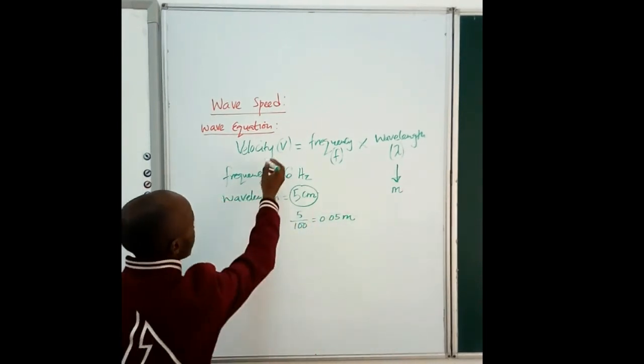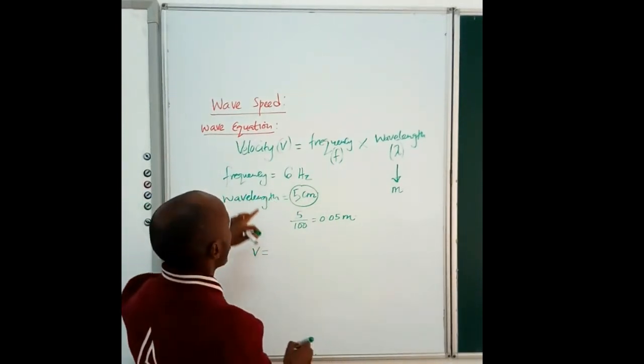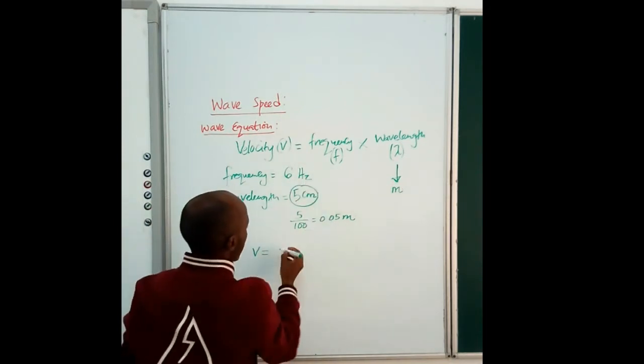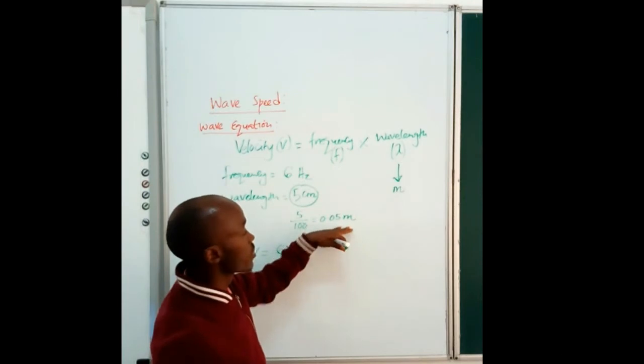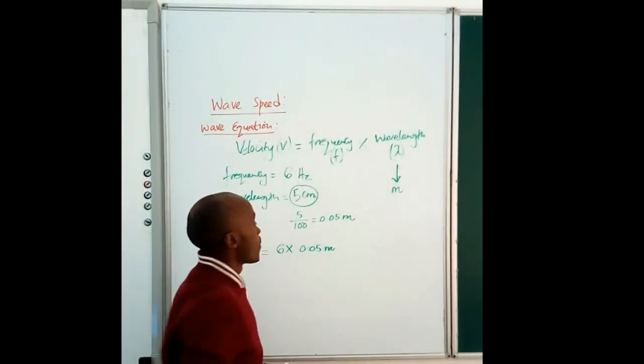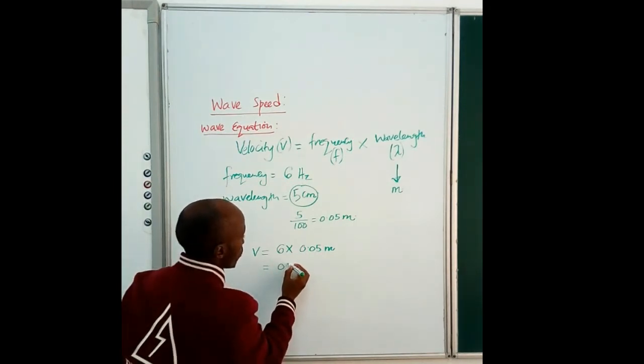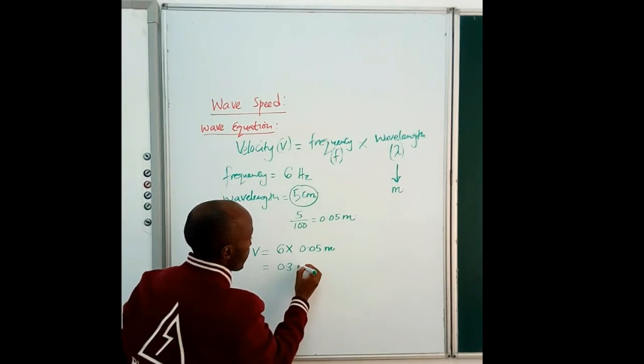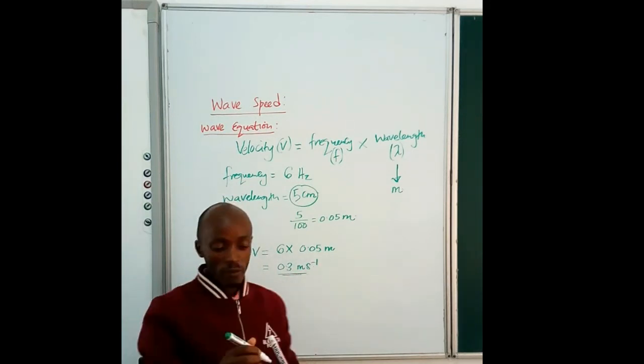Now, to get the wave speed, we say V is equal to frequency, which is 6 Hertz times the wavelength, which is 0.05 meters. So with that one, we know we have 0.3 meters per second. That is our wave speed.